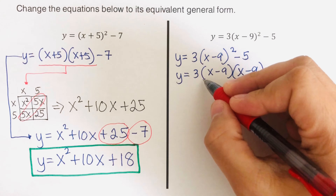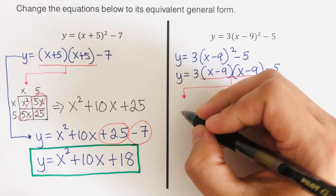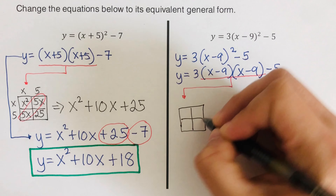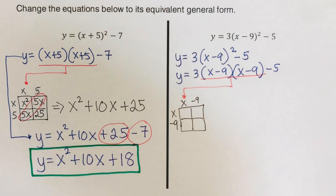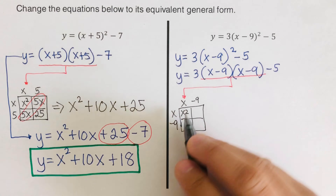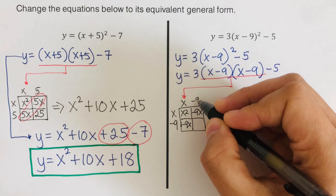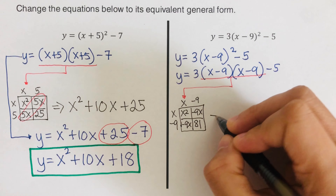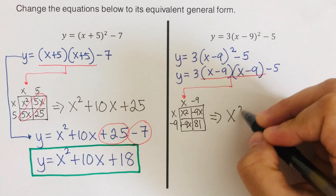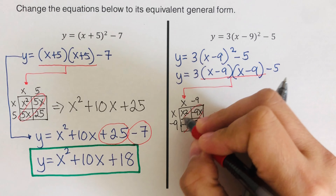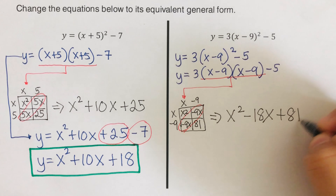We rewrite as y equals three times (x minus nine)(x minus nine) minus five, and use the area model. x times x is x squared, x times negative nine is negative 9x, negative nine times x is another negative 9x, and negative nine times negative nine is positive 81. Combining like terms: x squared minus 18x plus 81.